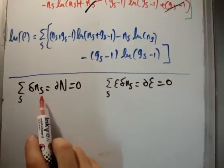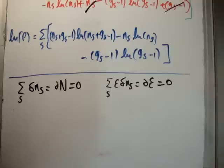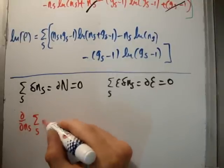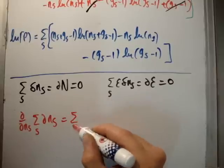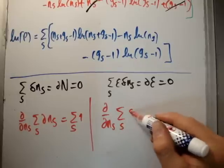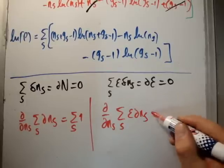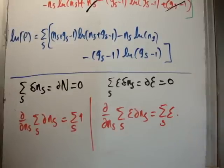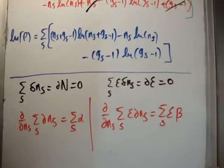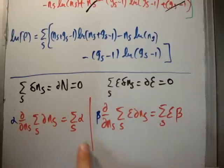Taking del/del(n sub s) of the first constraint gives us the sum of 1 (which is just a constant per term). Taking del/del(n sub s) of the sum of epsilon times delta n sub s gives us the sum over s of epsilon. So when we multiply by alpha and beta respectively, the right-hand side becomes the sum over s of alpha plus the sum over s of beta times epsilon — those are our Lagrange multiplier contributions.